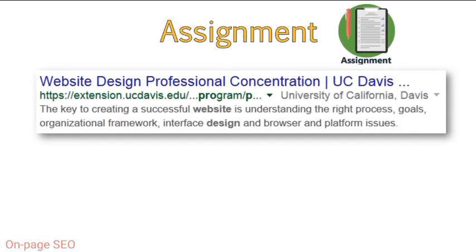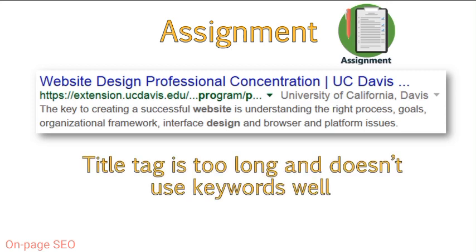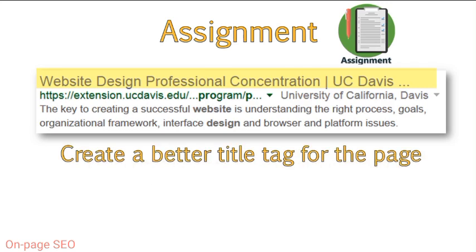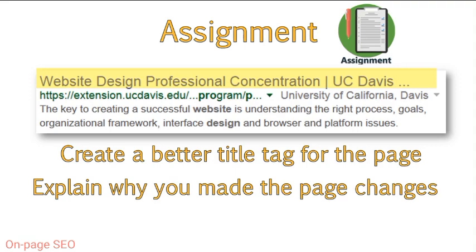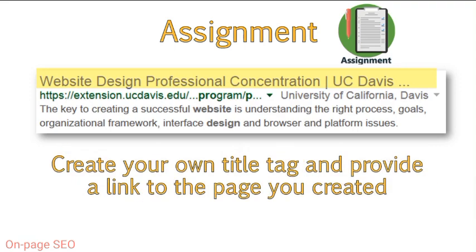Now that you understand more about the process of optimizing title tags, take a moment to craft one yourself. You can see that this page on UC Davis Extension's website doesn't have a very great title tag — it's too long and doesn't have great keyword usage. Very few people are likely to search for a phrase like 'website design professional concentration.' I have provided a link to this page in your course material. Take a look at the page and create a better title tag following the title tag best practices we just discussed. Explain why you made the changes you did. In addition, create your own title tag for a page and website of your choosing and provide the link.